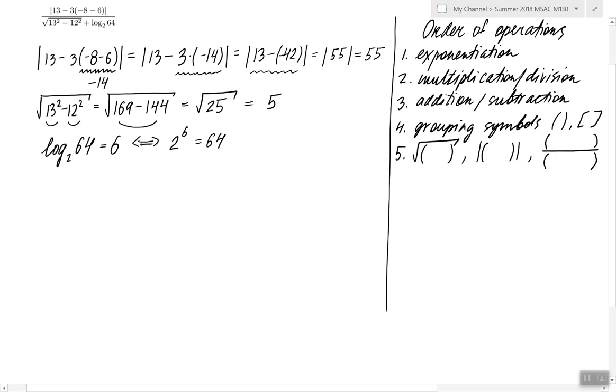After we figure out what the absolute value, the radical, and the log are equal to, we can take those values and put them back in to replace their corresponding expressions. Instead of the absolute value we put 55, instead of the radical we put 5, and instead of the log we put 6.